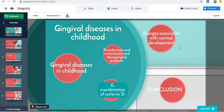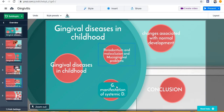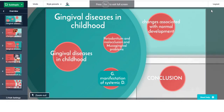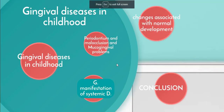We discussed the changes that are associated with normal development, and we discussed Gingival Disease in Childhood. Today we are discussing gingival manifestation of systemic disease and the condition of periodontium in case of malocclusion and mucogingival problems. I will give you some advice and conclusions regarding this subject.